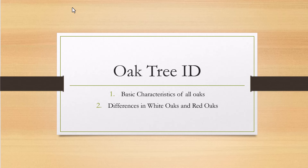Before we identify individual oaks, I want to go over basic oak tree identification. There are some basic characteristics that all oak trees share. Then we're going to divide all oaks into one of two groups: the white oaks or the red oaks. The white oaks are going to have a certain set of characteristics, and the red oaks are going to have a certain set of characteristics as well.